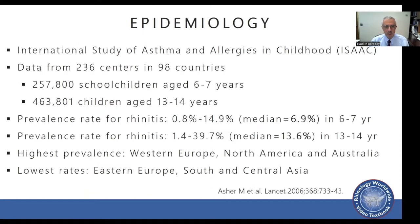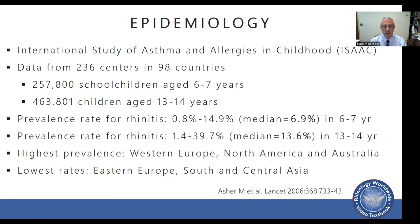Let's start by talking about epidemiology. The ISAAC study, or the International Study of Asthma and Allergies in Childhood, included data from 236 centers in 98 countries, about 257,000 school children ages six to seven years, and almost half a million children ages 13 to 14. The prevalence rate for rhinitis varied between 0.8 and 14.9 percent, with a median of about 6.9 percent in kids six to seven years old.